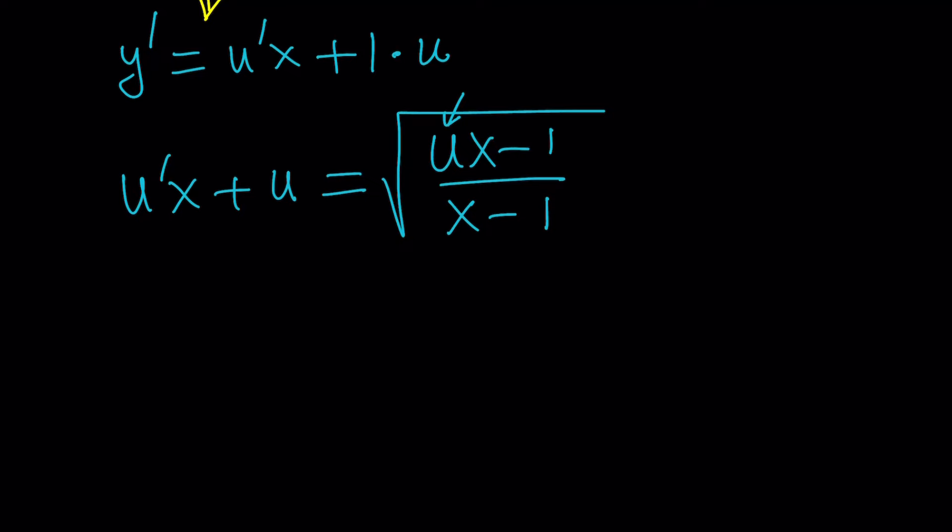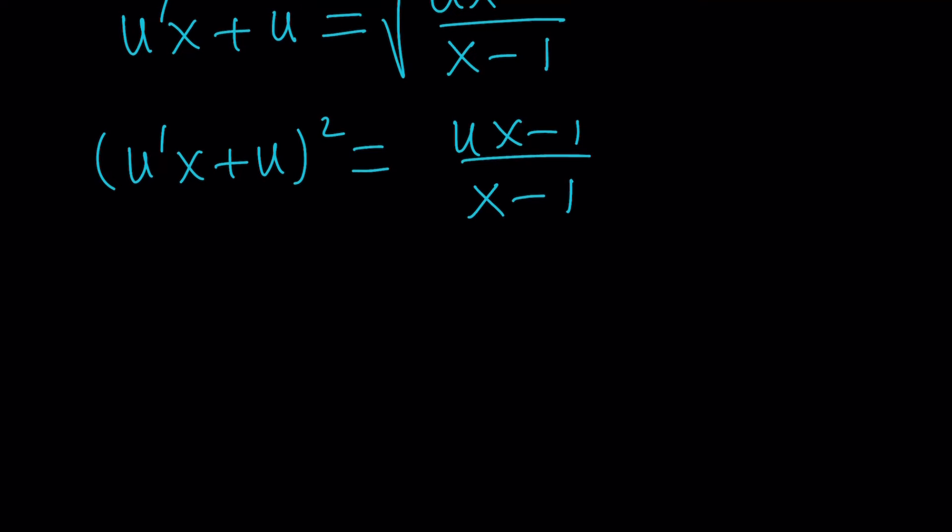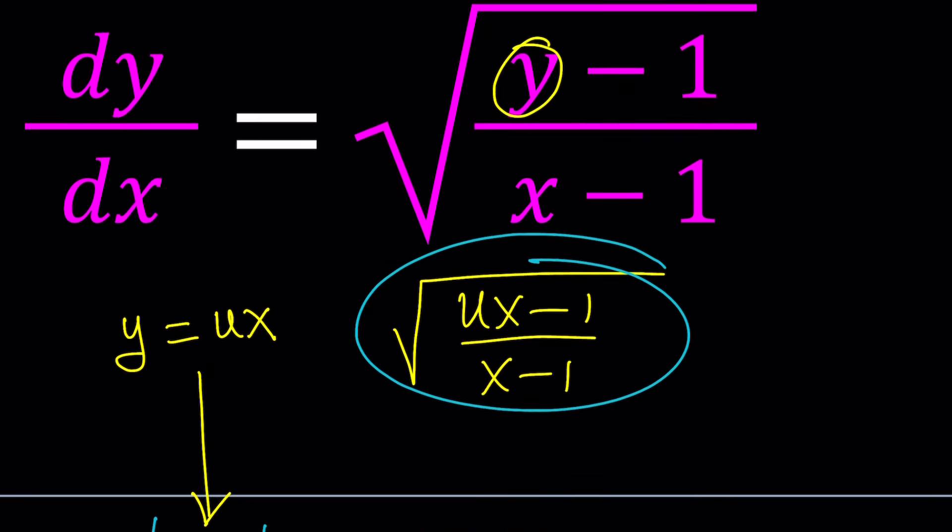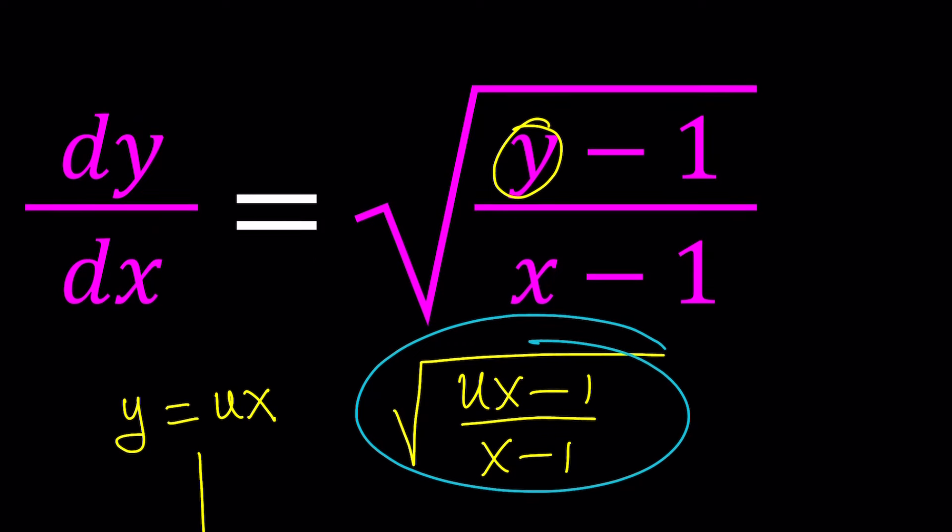So, how can we solve this problem? You could definitely try squaring both sides at this point and get rid of the radical. But that will bring other complications, because now you're going to have a nonlinear differential equation. Because when you square u prime, that basically makes it nonlinear. And that's going to give us a lot of trouble. So, this was just an attempt. I knew it wasn't going to work. And the reason for that is this equation is not homogeneous.